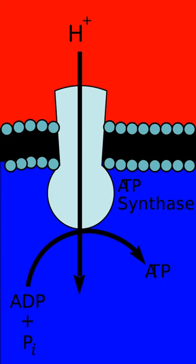In eukaryotes, an important electron transport chain is found in the inner mitochondrial membrane where it serves as the site of oxidative phosphorylation through the action of ATP synthase. It is also found in the thylakoid membrane of the chloroplast in photosynthetic eukaryotes. In bacteria, the electron transport chain is located in their cell membrane.